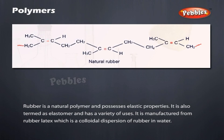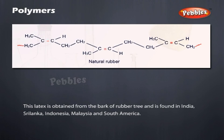Natural Rubber: Rubber is a natural polymer and possesses elastic properties. It is also termed as an elastomer and has a variety of uses. It is manufactured from rubber latex, which is a colloidal dispersion of rubber in water. This latex is obtained from the bark of the rubber tree and is found in India, Sri Lanka, Indonesia, Malaysia, and South America.